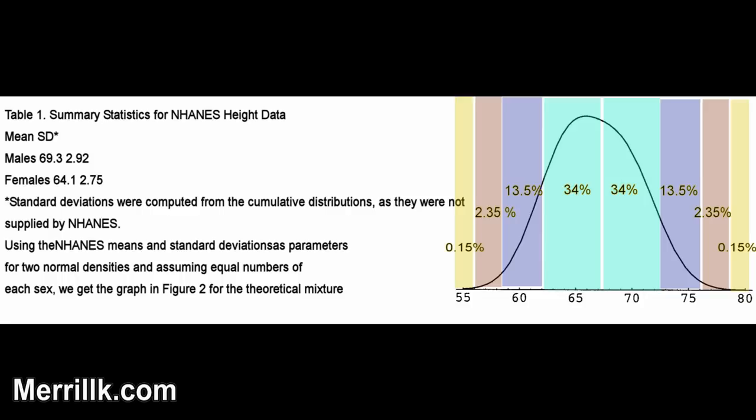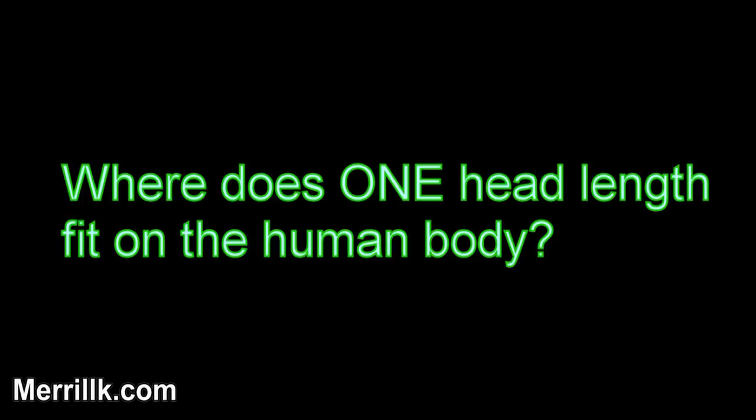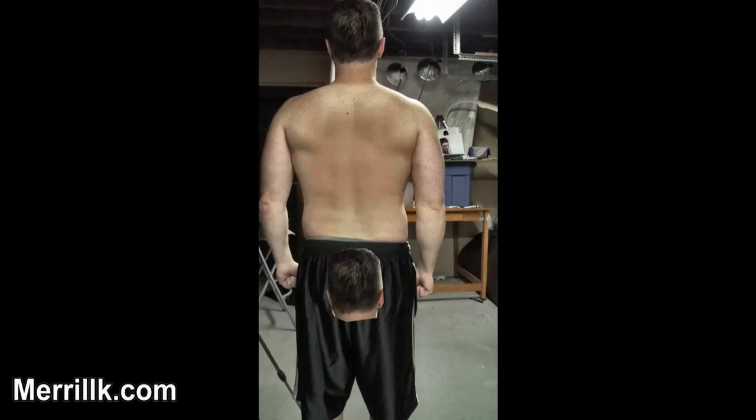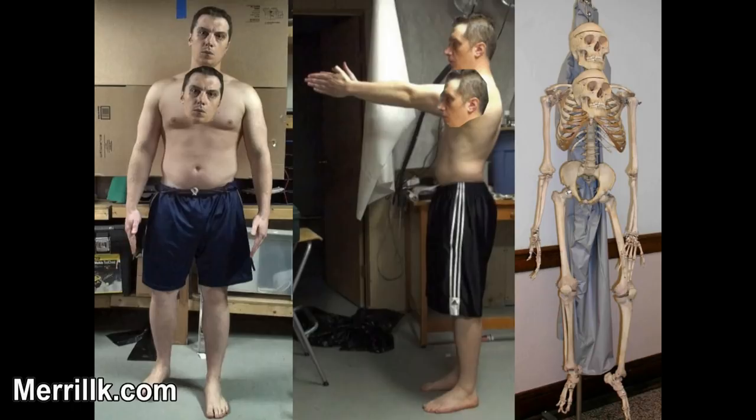Now we have to figure out where our cranium fits on our body. Spaces on our bodies equivalent to one head length are: from the top of the armpit to the joint of the elbow, from the bottom of our chin to our nipples, from our nipples to our navel, and the height of our rear end.